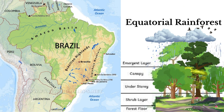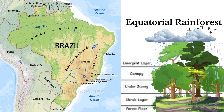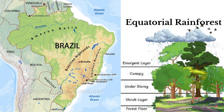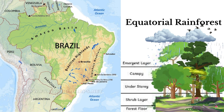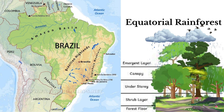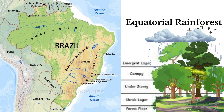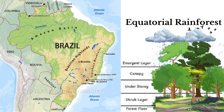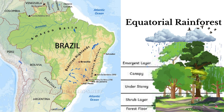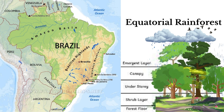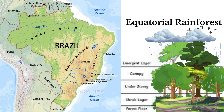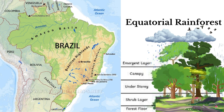The rainforest has a layered structure. At the highest level is the emergent layer with the tallest trees, followed by the canopy layer where the crowns of the trees are interconnected to form a continuous cover. Below the canopy layer is the understory, where trees struggle for sunlight. This is followed by the shrub layer, made of plants smaller than trees. Finally, there is the forest floor with very few plants and a thick leaf litter layer.